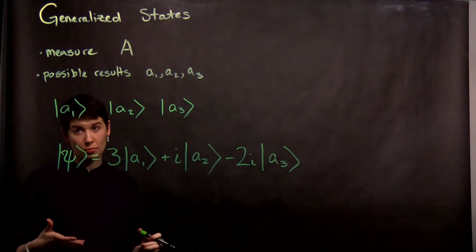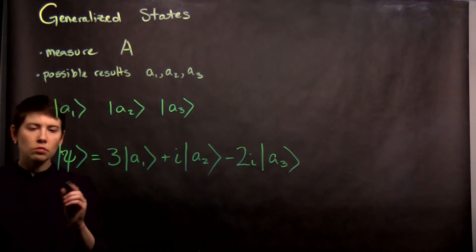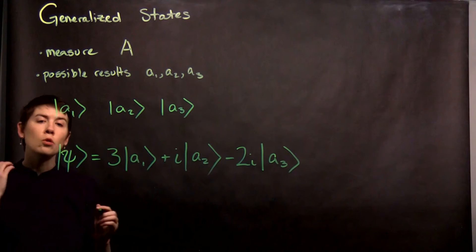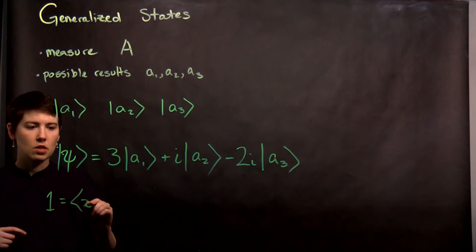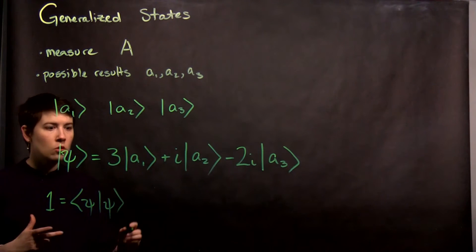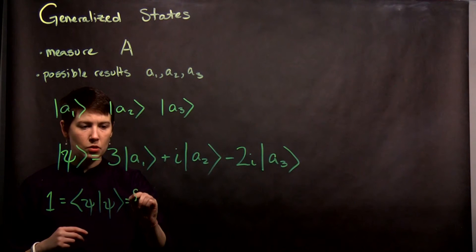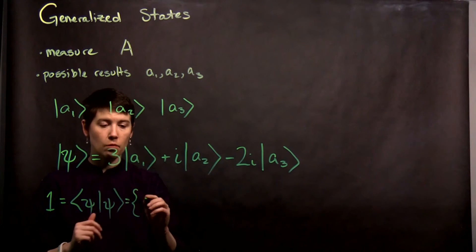So the next step would be normalizing. Now, if you're not sure how to normalize, well, even though this looks different, we're still going to use the same rule that we used before that one needs to equal the inner product of it with itself. Remember that for the bras, we're going to need to take the complex conjugate.